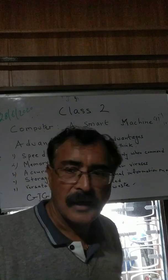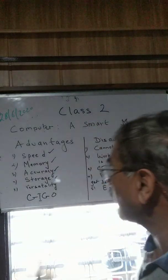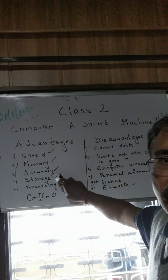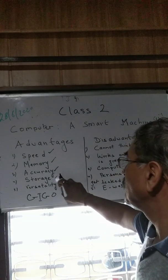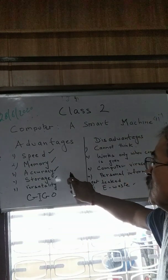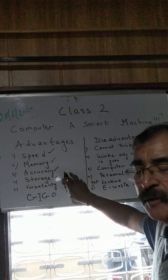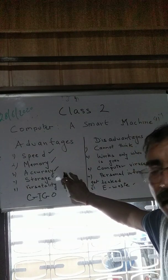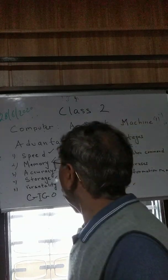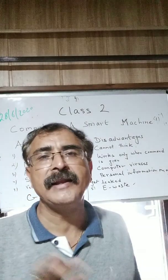Then there is storage — the computer can store a lot of information. I can type hundreds of pages and store it in secondary storage like a hard disk, pen drive, or CDs. Have you heard of a pen drive of 32 GB or 64 GB? The more the GB, the more you can store. Then versatility — versatility means the computer can do many types of work.